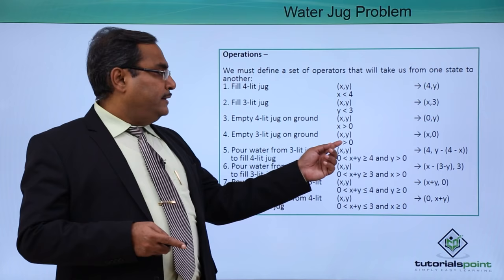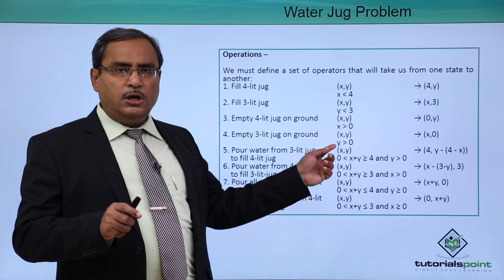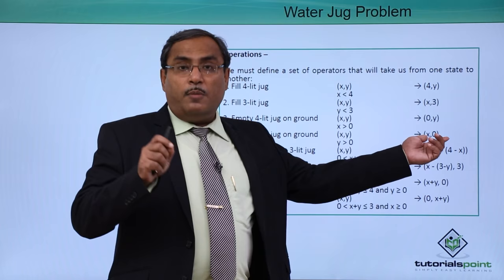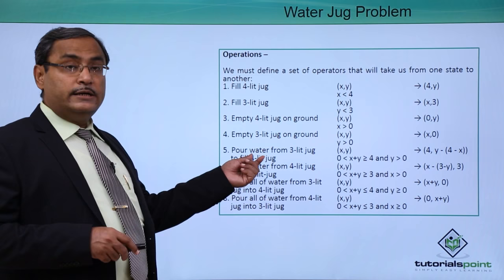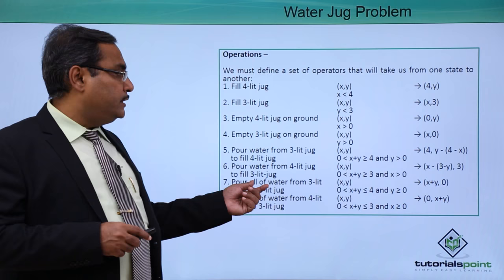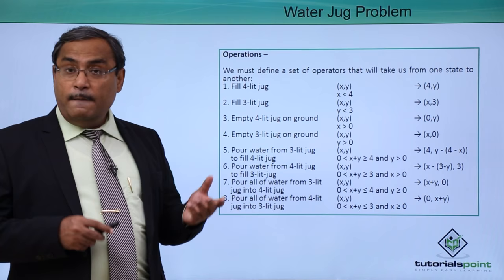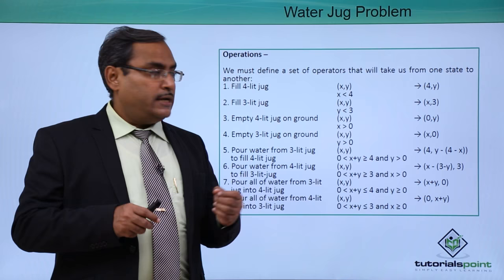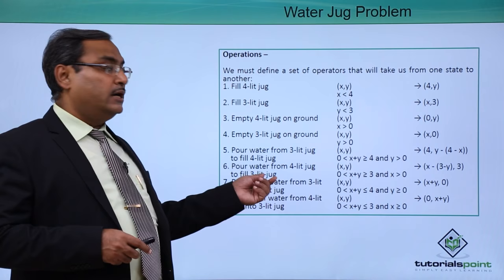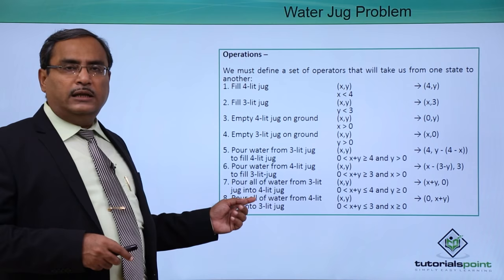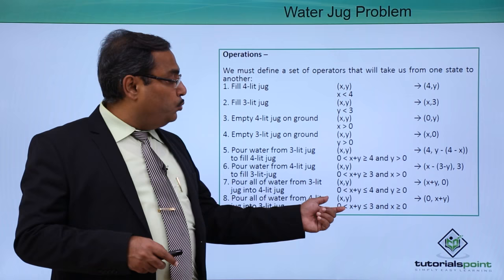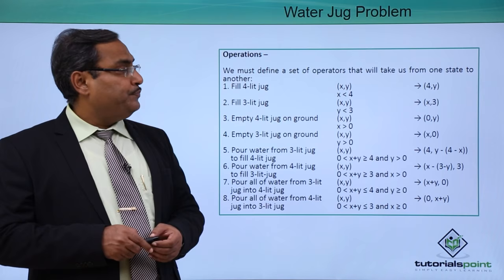Empty 3-litre jug on ground is possible if and only if y is greater than 0, and the resulting state is (x, 0). Pour water from 3-litre jug to fill 4-litre jug: the constraint is that x plus y must be greater than or equal to 4 and y must be greater than 0, meaning the 3-litre jug must have some water. Pour water from 4-litre jug to fill 3-litre jug is the opposite operation. We can examine how the state transitions take place under the conditions and constraints mentioned in this list.